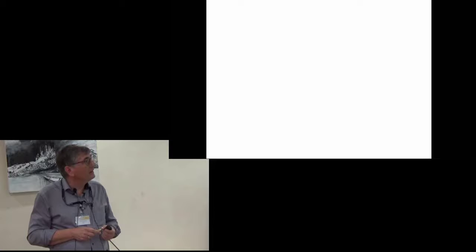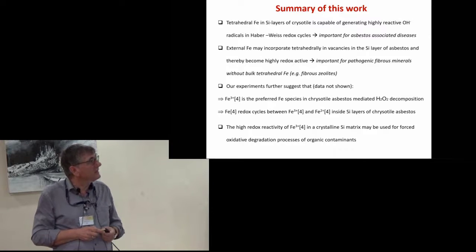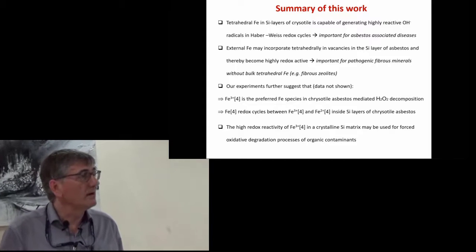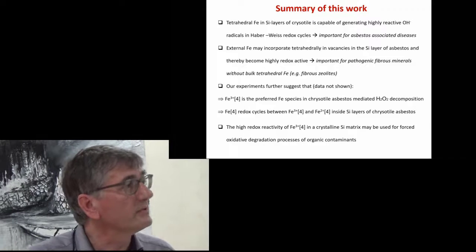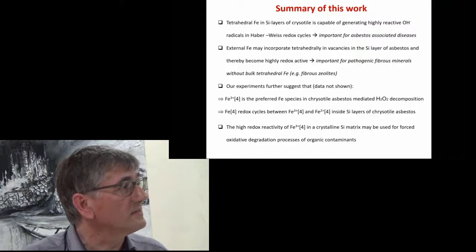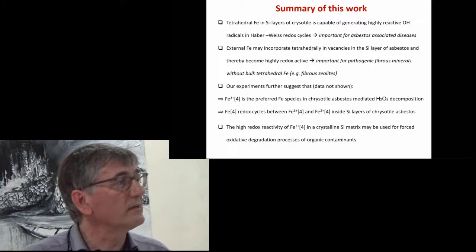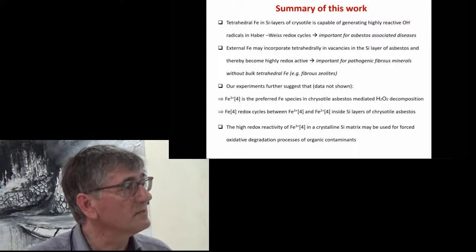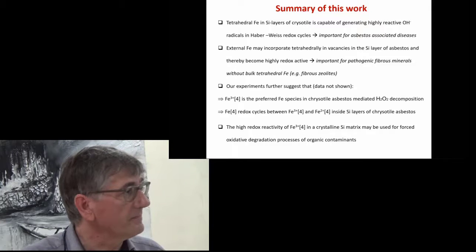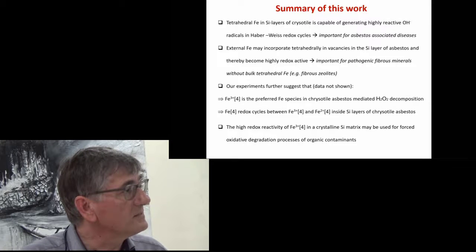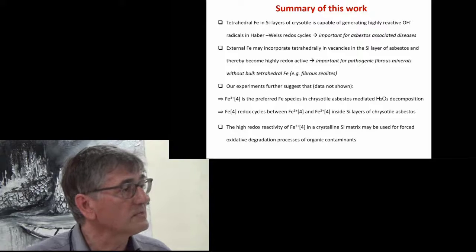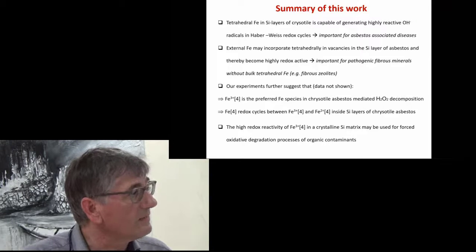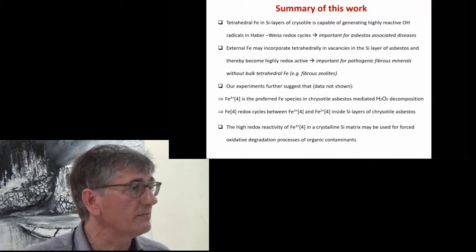What our experiments have demonstrated is that the tetrahedral iron, and only the tetrahedral iron, in the silicon layers of chrysotile is capable of generating highly reactive hydroxyl radicals in the Haber-Weiss redox cycle. This may be important for the pathogenesis of asbestos-associated disease. Further, we demonstrated that external iron may be incorporated in vacancies in the silicon layer of asbestos and thereby become highly redox active. This may also be important for pathogenic fibrous minerals which have no bulk tetrahedral iron, for example in fibrous zeolites. We also showed that this tetrahedral ferric iron is the preferred iron species in chrysotile asbestos-mediated decomposition of hydrogen peroxide, and that this tetrahedral iron redox cycles between ferric and ferrous inside the silicon layer of chrysotile asbestos.